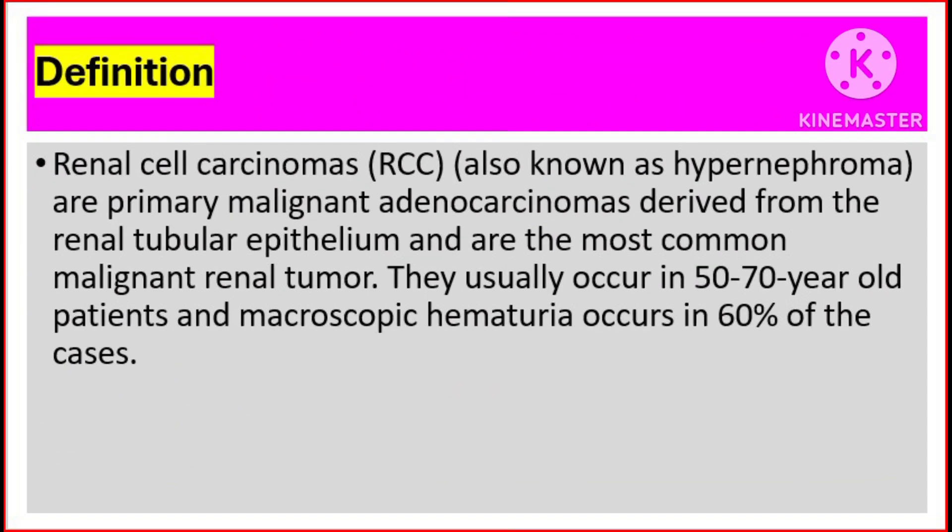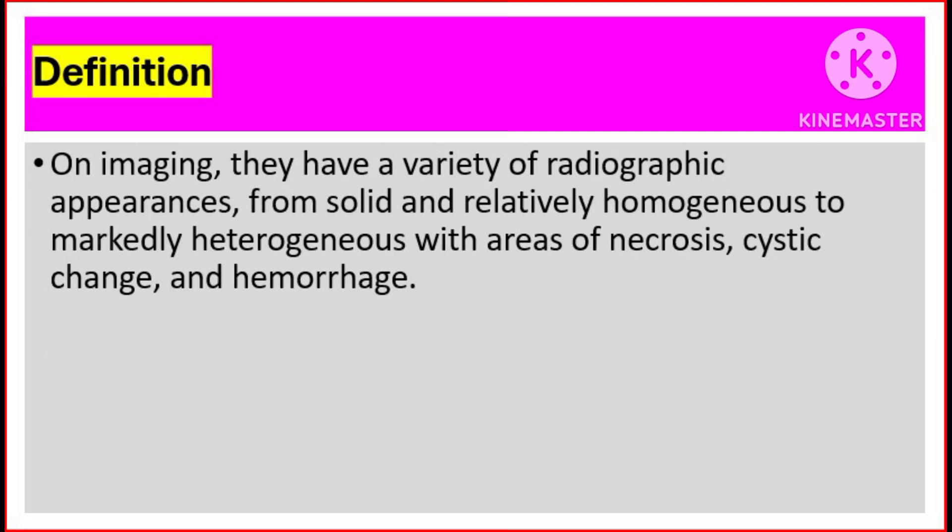Definition. Renal cell carcinomas, also known as hypernephroma, are primary malignant adenocarcinomas derived from the renal tubular epithelium and are the most common malignant renal tumor. They usually occur in 50 to 70 year old patients and macroscopic hematuria occurs in 60% of cases. On imaging, they have a variety of radiographic appearances from solid and relatively homogenous to markedly heterogeneous with areas of necrosis, cystic change, and hemorrhage.